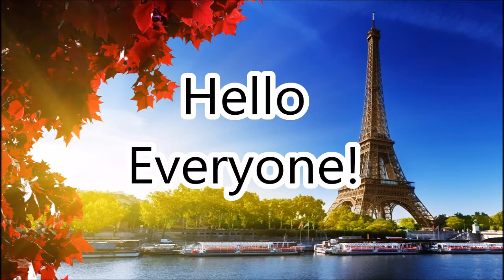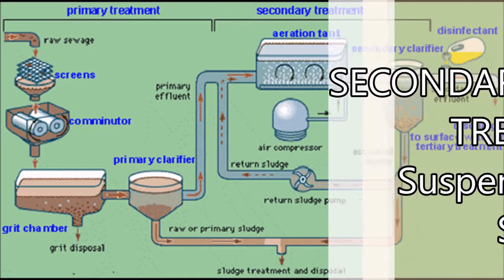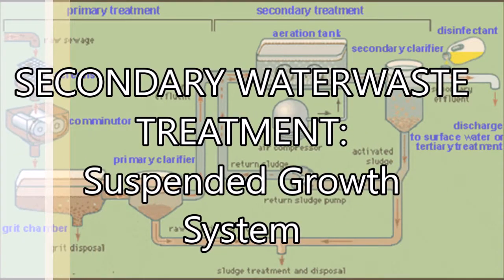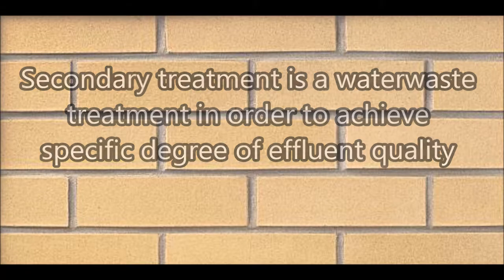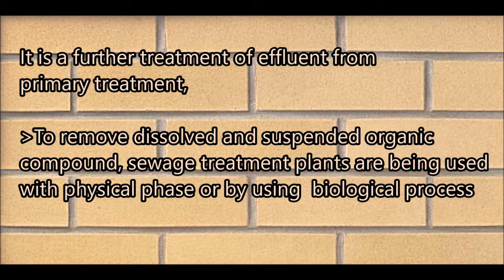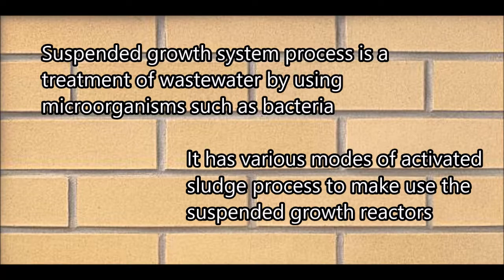This video will tell you more about suspended growth systems in secondary treatment of wastewater. Secondary treatment is a wastewater treatment to achieve a specific degree of effluent quality. It is a further treatment of effluent from primary treatment to remove dissolved and suspended organic compounds. The suspended growth system method is a treatment of wastewater using microorganisms such as bacteria, with various modes of activated sludge process.